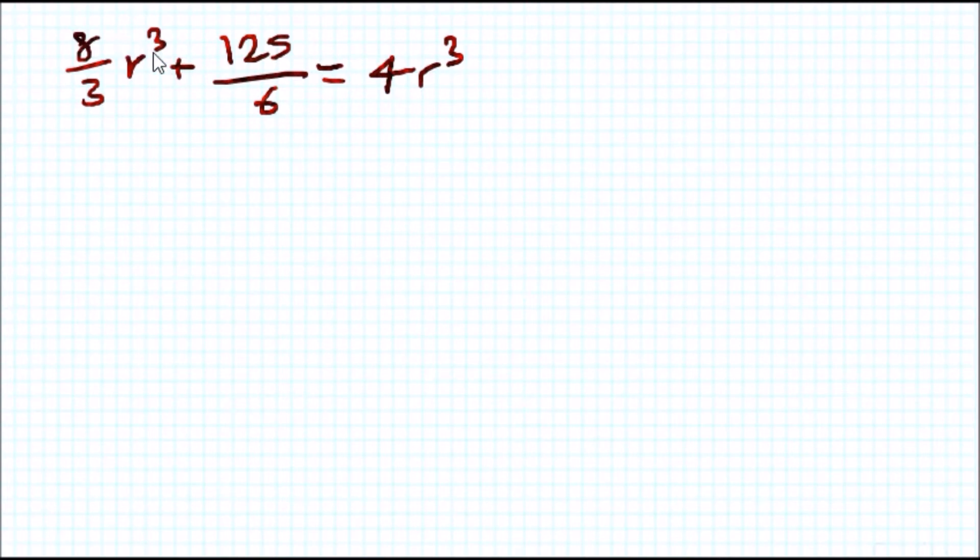So I could subtract 8 over 3 r cubed across. We're going to have 125 over 6 equals 4 take away 8 over 3, which gives us 4 thirds r cubed.